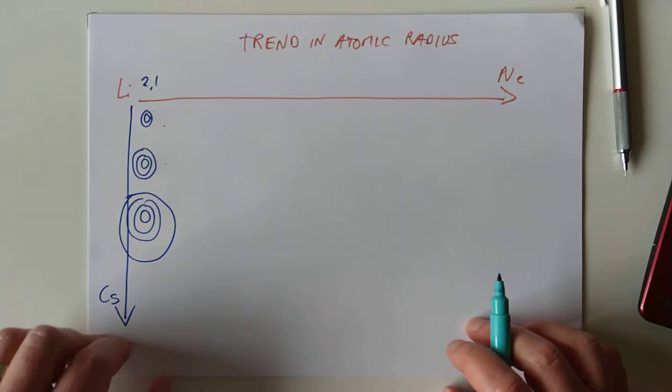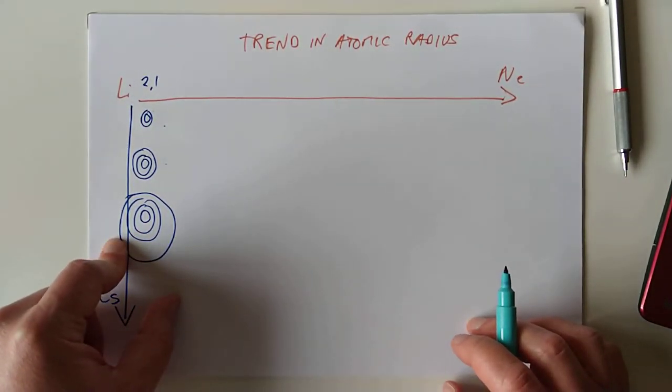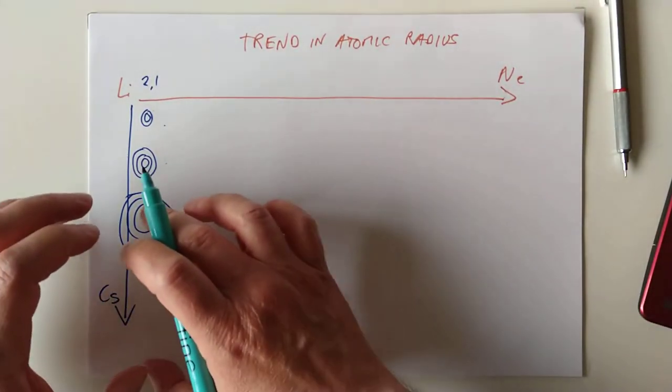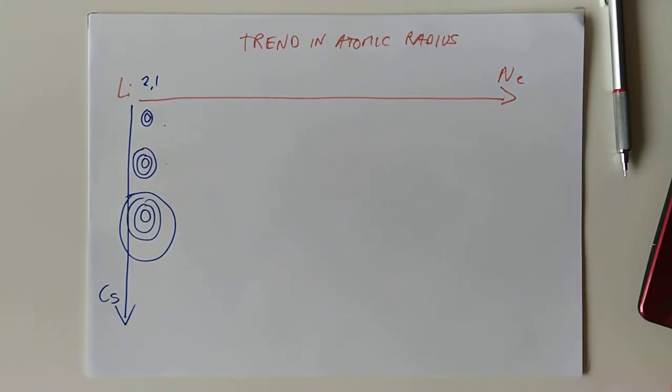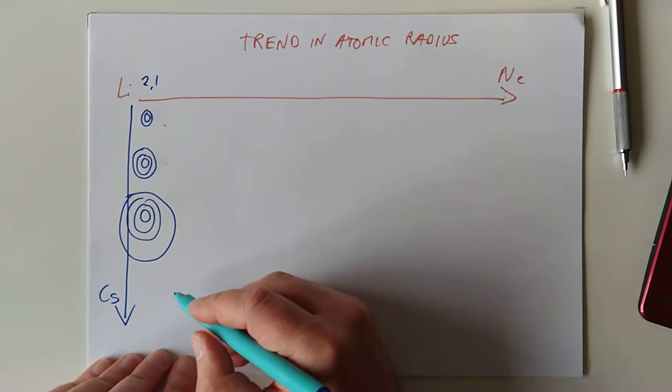As you go down a period, a horizontal stripe on the periodic table, you're adding one extra layer of electrons each time. I don't know if you realized that or not before, that's actually what happens. And of course, as you're adding one extra layer of electrons, two things happen, actually, to explain the size of these atoms increasing.